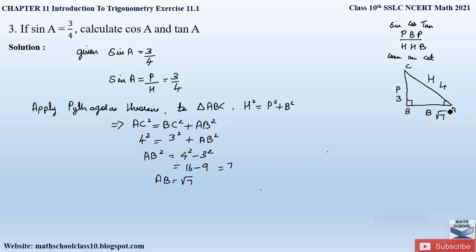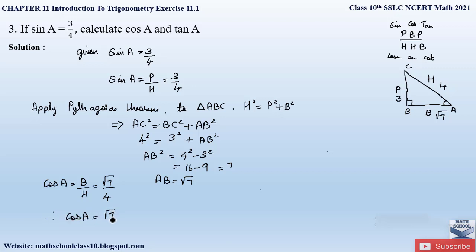Now we have found out all three sides of the triangle. Let us determine the value of cos A. The trigonometric ratio for cos A is base by hypotenuse. Our base value is √7 and our hypotenuse is 4, so therefore cos A = √7 / 4.